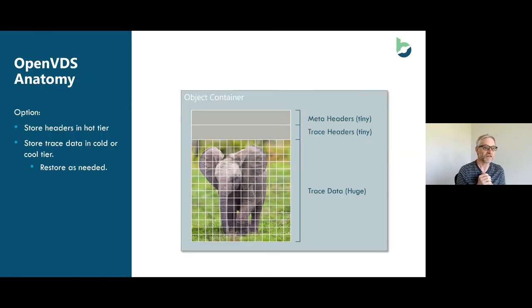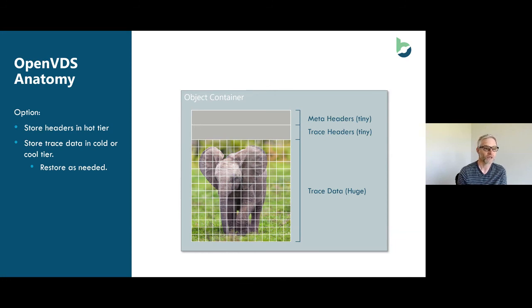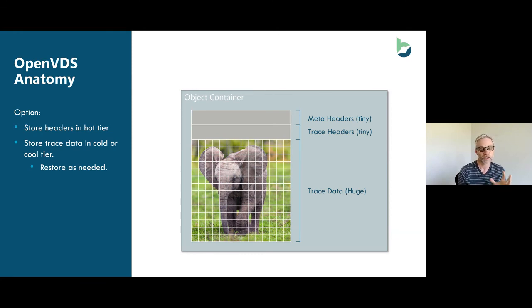The anatomy of OpenVDS stores the metadata — all the specific headers and various metadata about the file — separately from the actual trace data. Trace headers can also be stored separately. This lends itself to a concept where you can keep metadata and trace headers in the hot tier, while the large trace data sits in archive, bringing individual traces back on demand as needed. There's lots of potential around OpenVDS for enabling new ways of working.